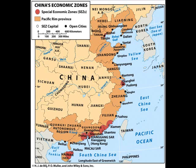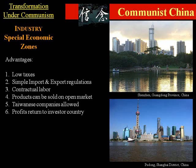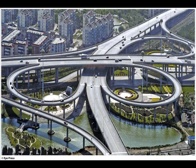After the communists took over, they tried a few Soviet-style five-year plans, which did not work out very well — ending in starvations and economic collapse. So they decided to try special economic zones, in which they would allow foreigners to come in and invest within China, while the communist government controlled where that investment took place. They identified certain areas along the coast and created these special economic zones. The advantages were low taxes, simplified import and export regulations, contractual labor, open market product sales, and investment allowed by other Asian companies like Japan, Taiwan, and Korea, with profits able to return to the investing country.